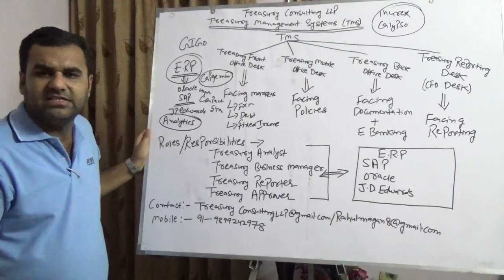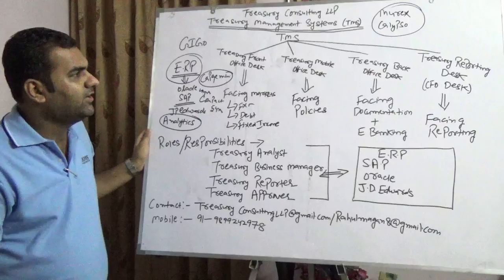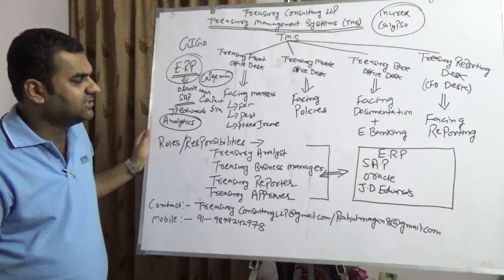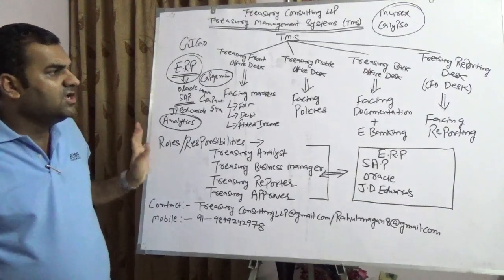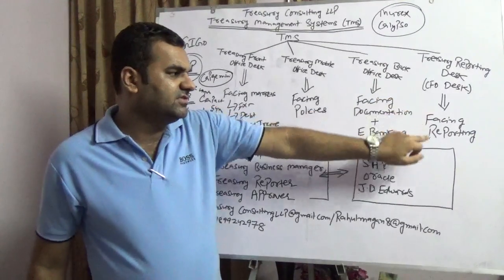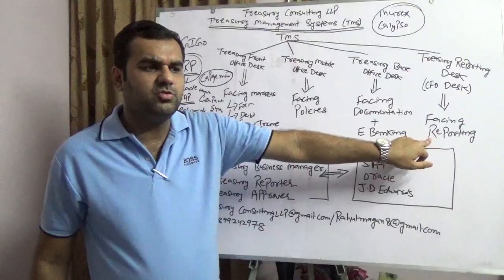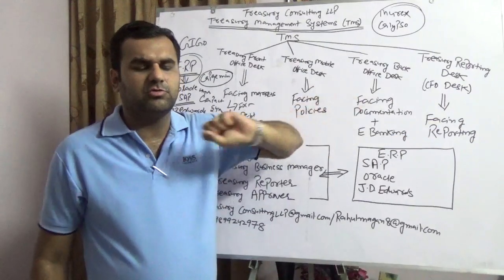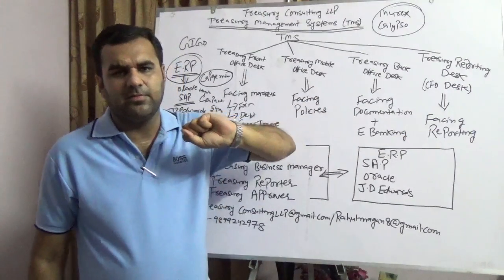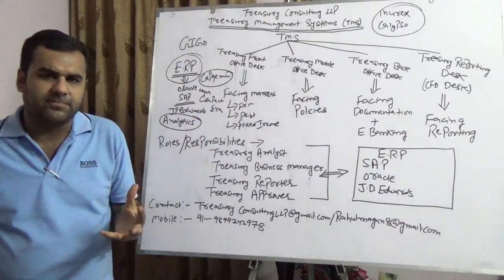It is advisable for corporate treasury to have a treasury management system in place. The fourth part is the CFO desk, which is the reporting office. What they do is simply fetch out the data and make the report.